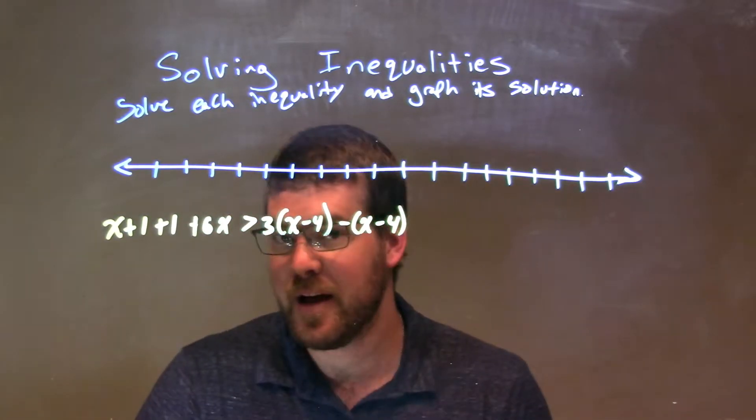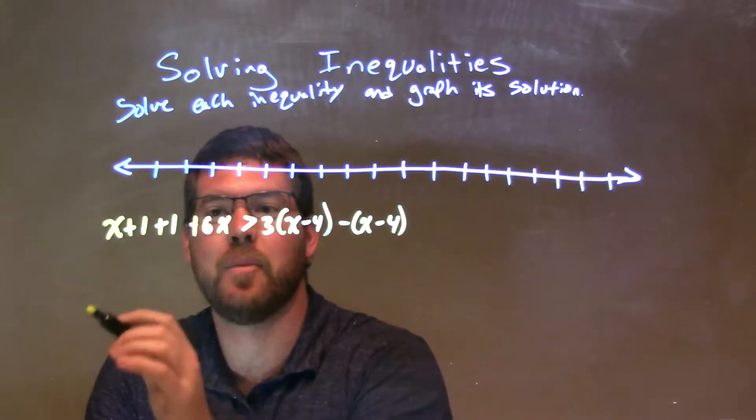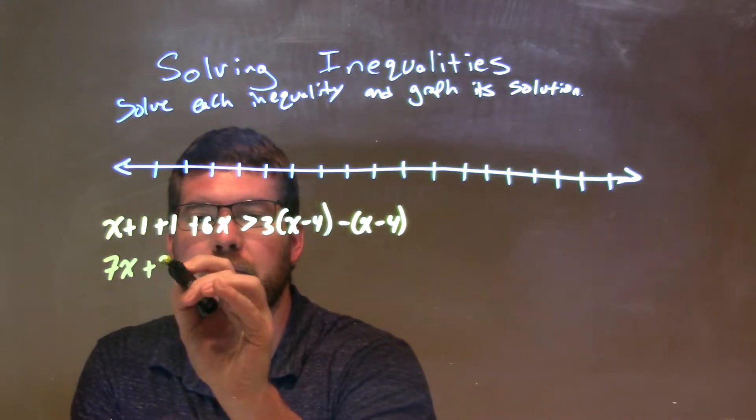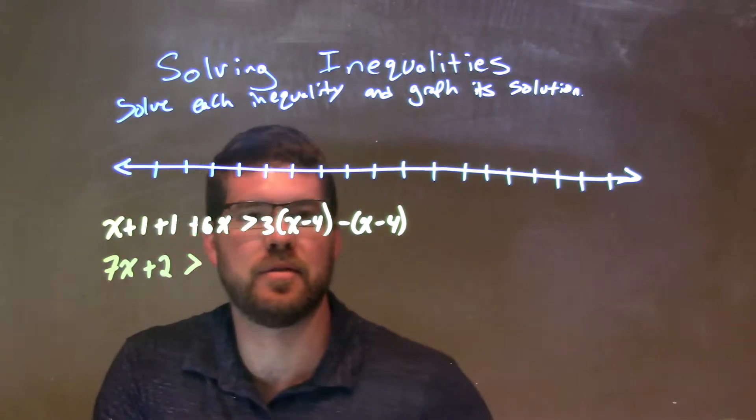The first thing I like to do is just simplify as much as possible. So, the left-hand side, we can combine together x and 6x is 7x, and 1 plus 1 is 2. I really chunk some part of this now.